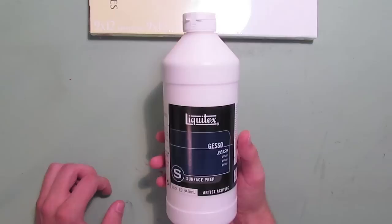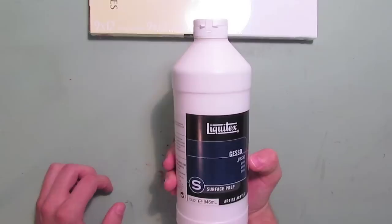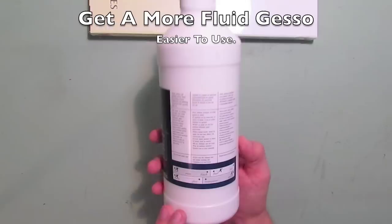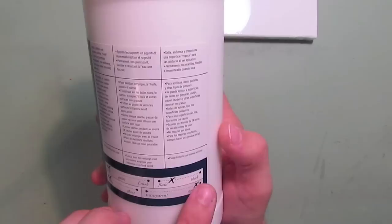And the third thing that we're using is, well I'm using a Liquitex Surface Prep Gesso. I like the more, I guess this is considered the S because it says S but this one's more, I like to go with the more fluid. If you read on the back it shows the different levels here.